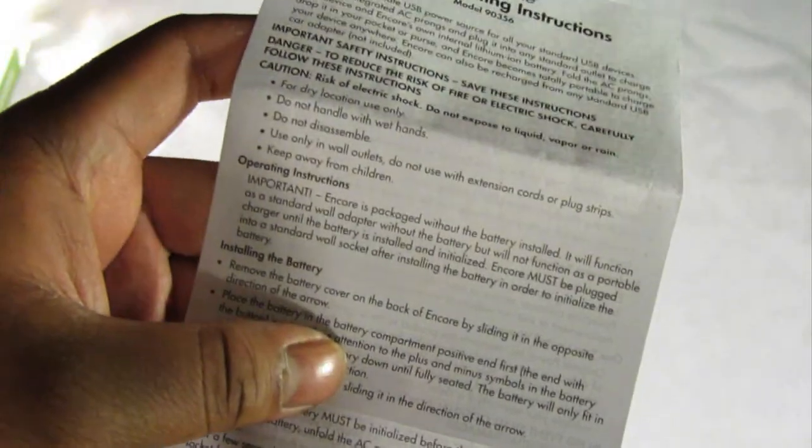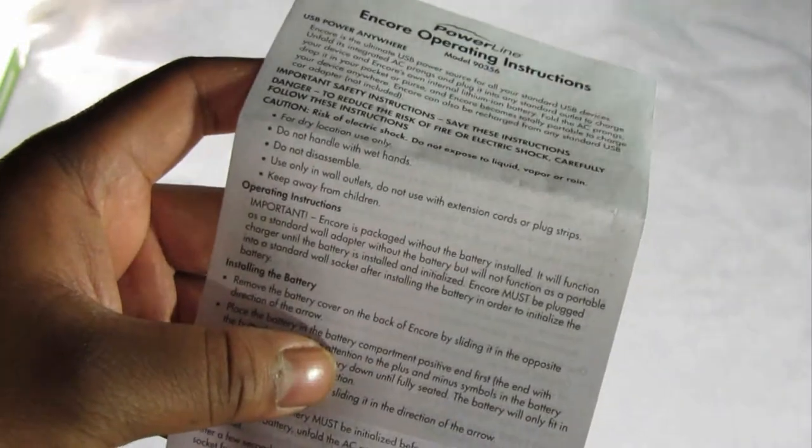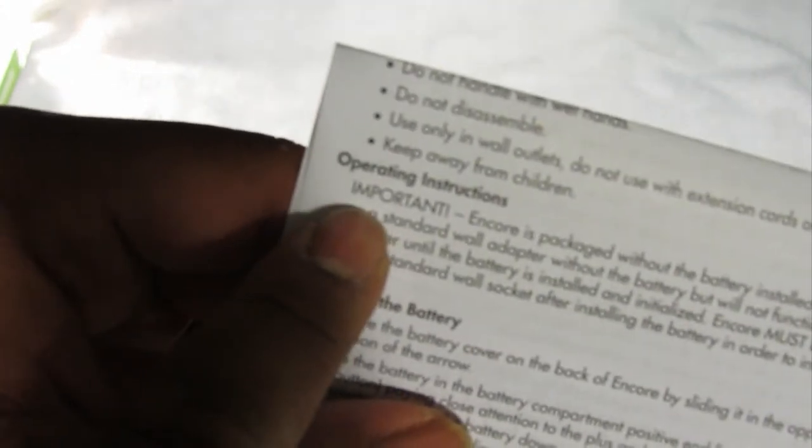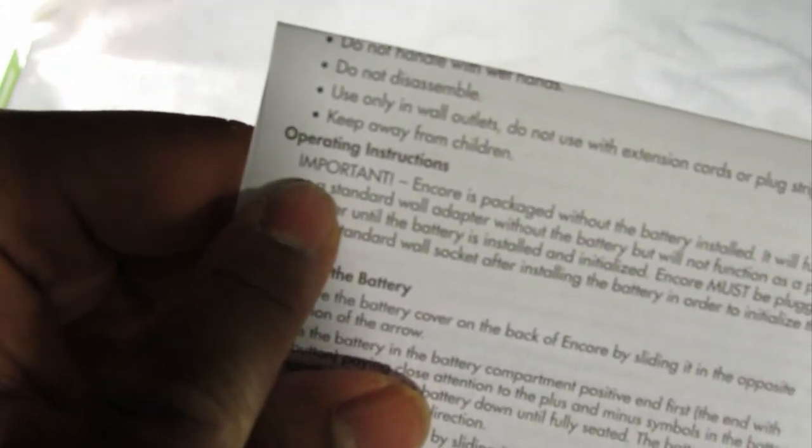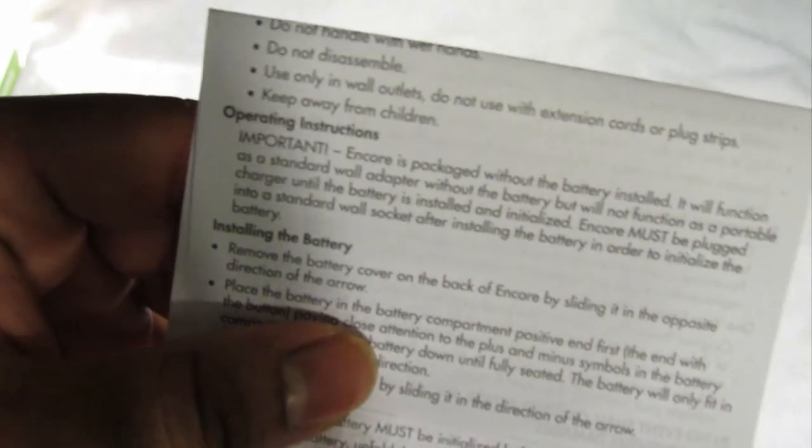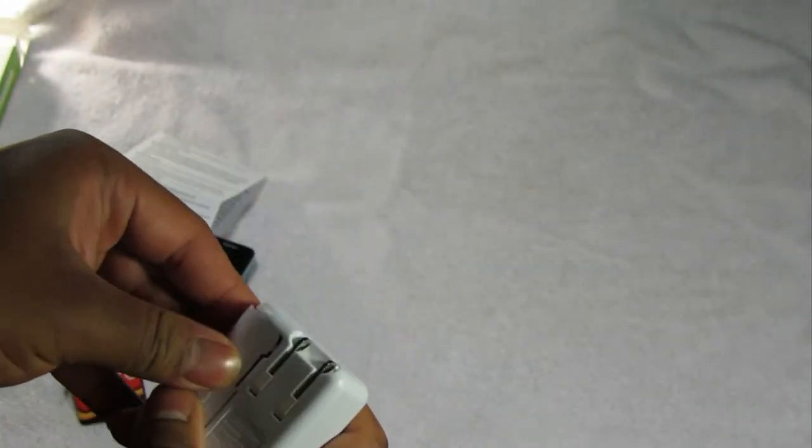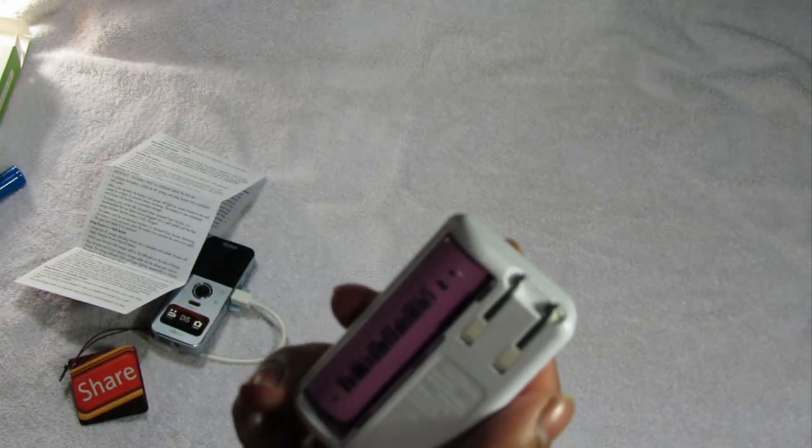Okay, guys. So, it was completely my fault. I did not read the operating instructions, which I typically don't. But this time, it was important. Right here, in the operating instructions, you see it says important in all caps. And next to it, it says that the battery has to be initialized before it can be used. What you have to do is you have to put the battery in here. And plug it into a wall socket for a couple of seconds so that it can recognize the battery and program it in.